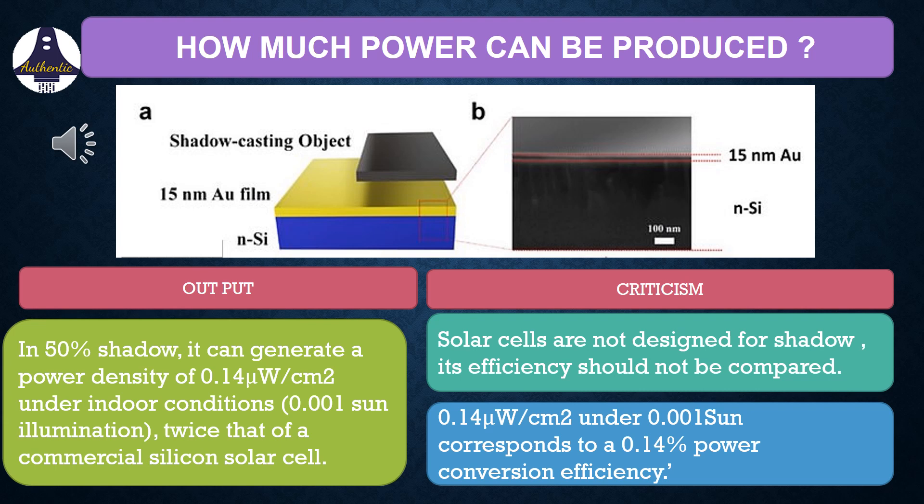Another thing is this shadow electric generator has very low efficiency. That is 0.14 microwatt per centimeter square under 0.001 sun illumination corresponds to a 0.14% power conversion efficiency.